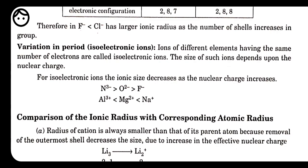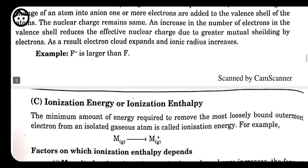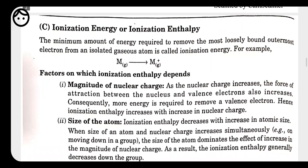Having covered ionic radius variation in period, we now compare ionic radius with atomic radius — that has already been discussed. Now let's move to ionization energy or ionization enthalpy. Ionization enthalpy is the amount of energy needed to remove an electron from any atom or element. For example, metal M in gaseous state, on removing an electron, becomes M⁺. The energy required for this is called ionization enthalpy.